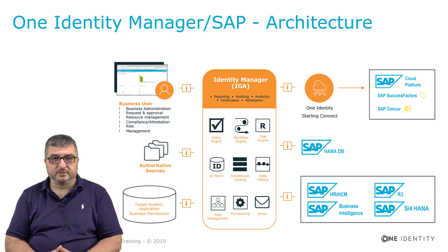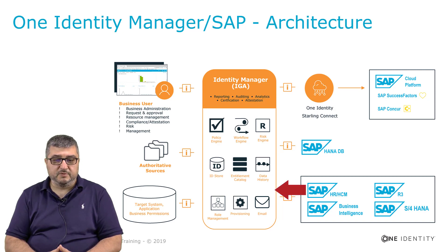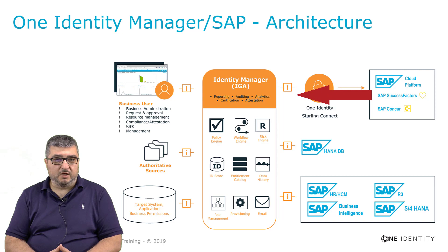When setting up an Identity Access Management System, we need authoritative data for employee and organizational data, or structures like cost centers. This information can be synchronized via the Identity Manager connector for SAP from SAP HR, where we can synchronize employee information, managers of departments, as well as org information, or SuccessFactors, which is the cloud-based HR solution from SAP.